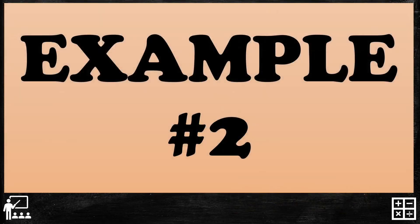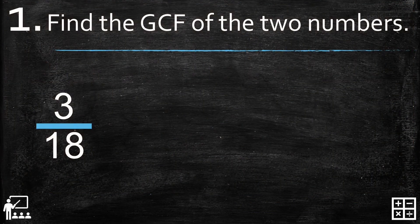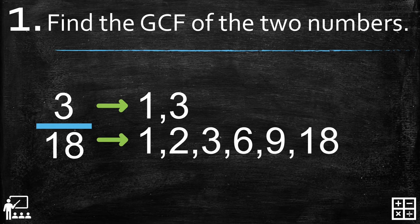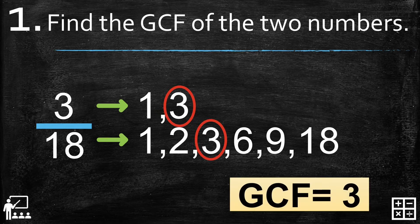Let's try another example: 3 over 18. Step 1, find the GCF using the listing method. The factors of 3 are 1 and 3. The factors of 18 are 1, 2, 3, 6, 9, and 18. The greatest common factor of 3 and 18 is 3.